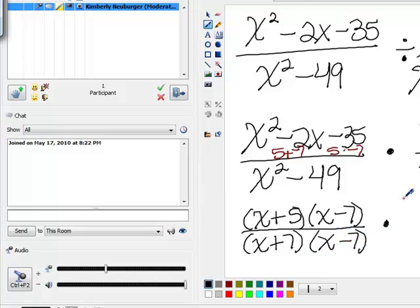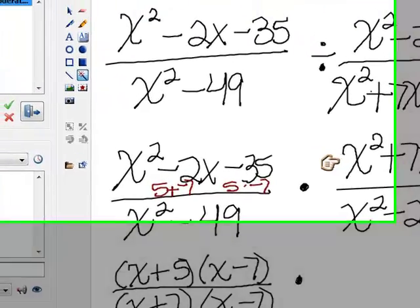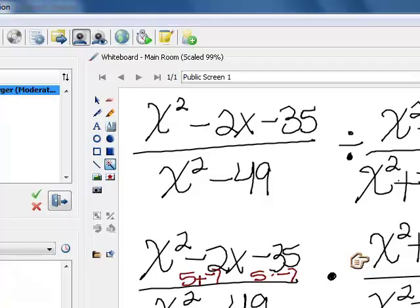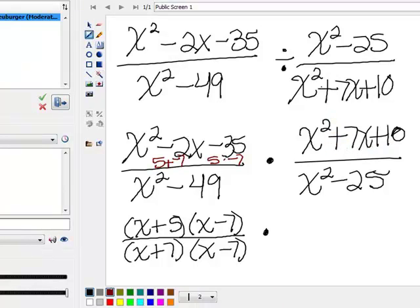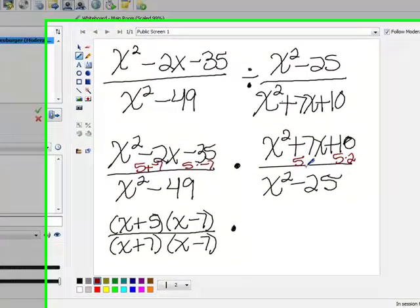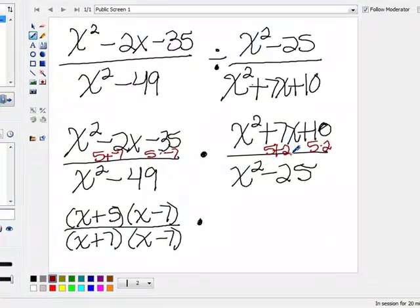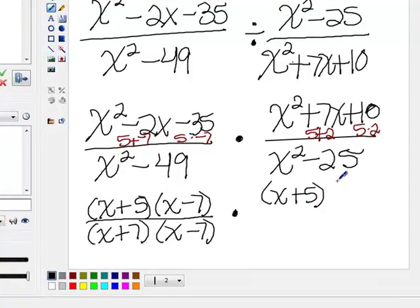Now let's look at our second expression. This particular one has three terms, and our leading coefficient is 1. So things that will multiply to get 10 and add up to 7, I notice would be 5 times 2 and 5 plus 2. So this will factor into x plus 5 times x plus 2.